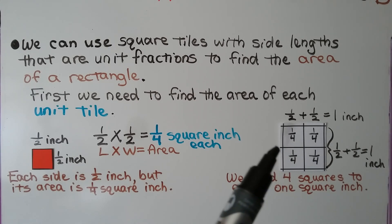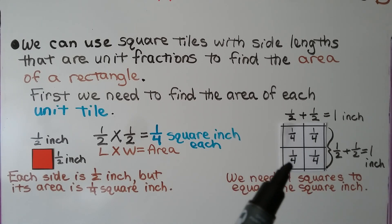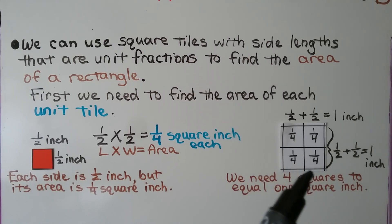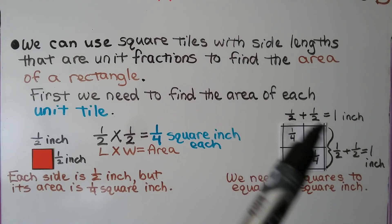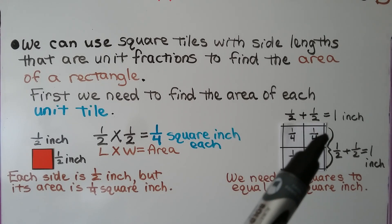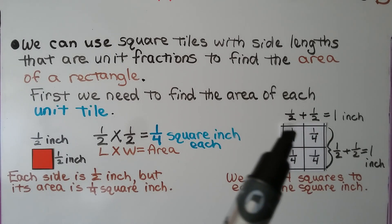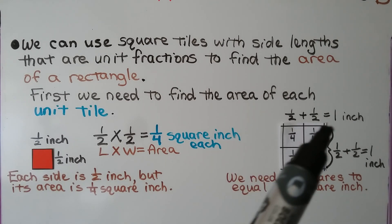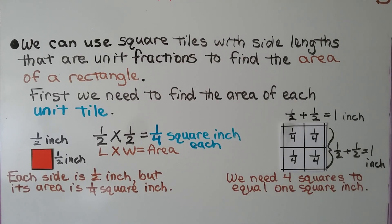And if we fit four of the little red squares here, that would be a half inch, a half inch, a half inch, and that would be one whole inch — and that would be one whole inch. We would need four squares to equal one square inch.